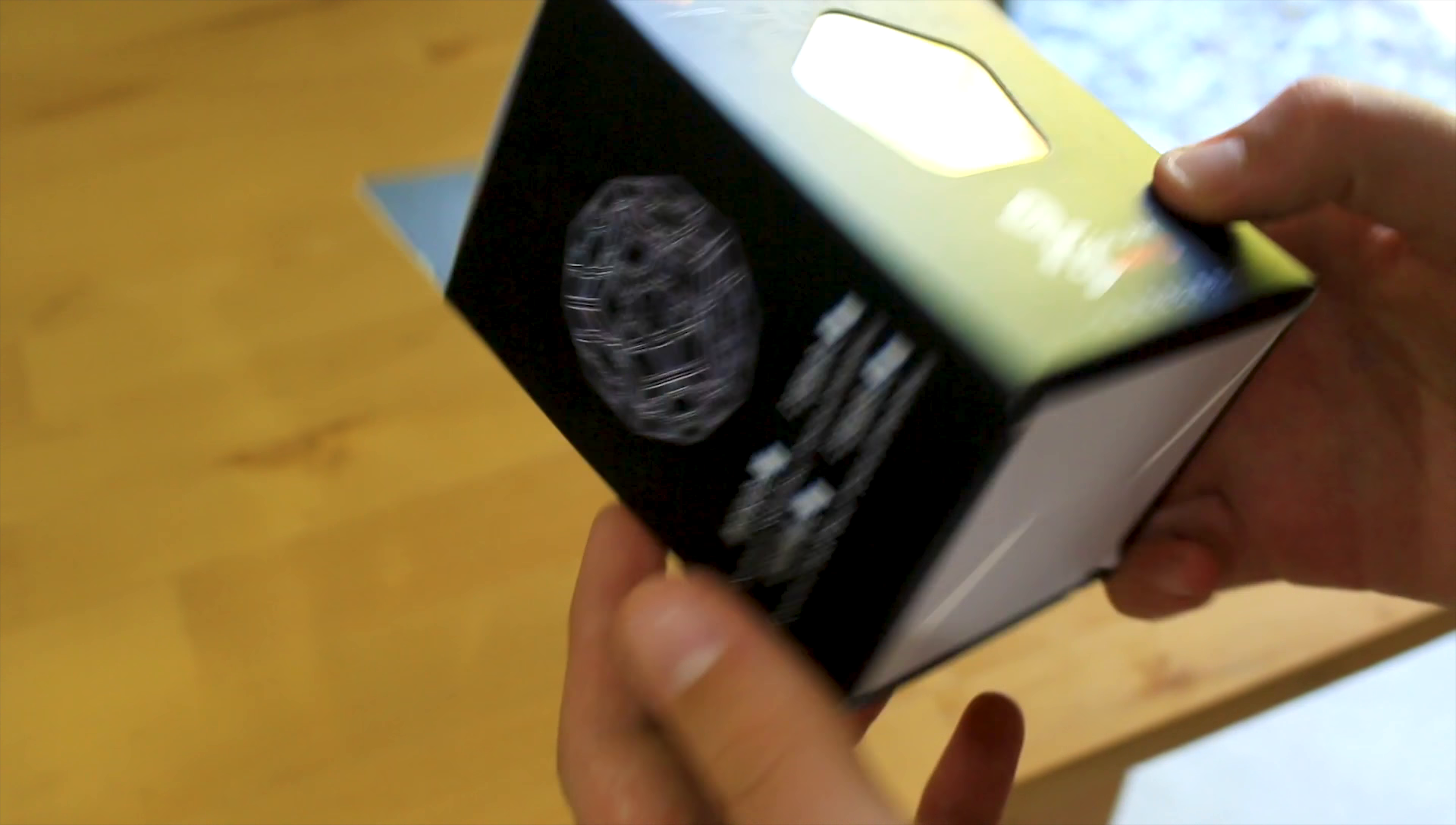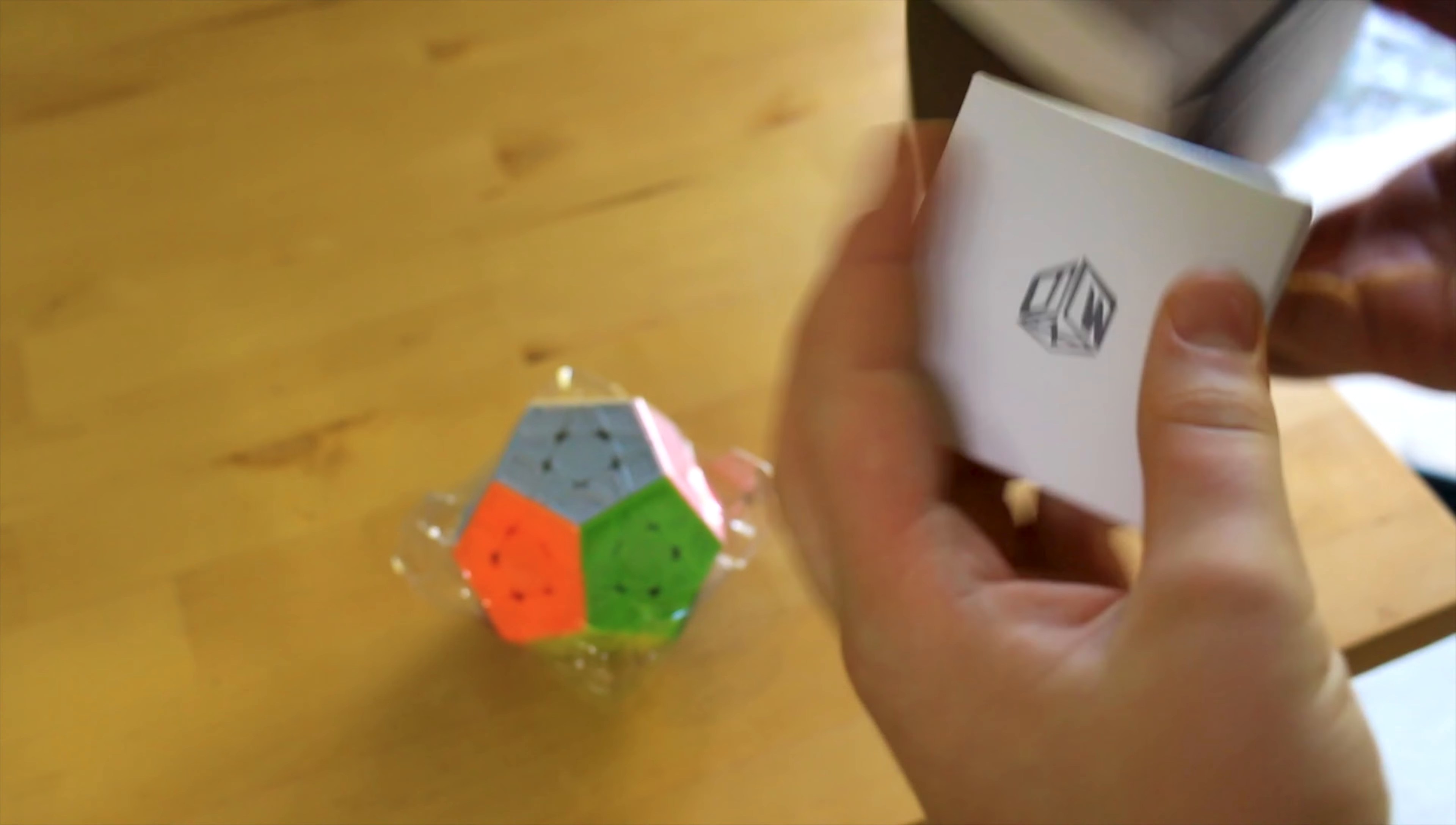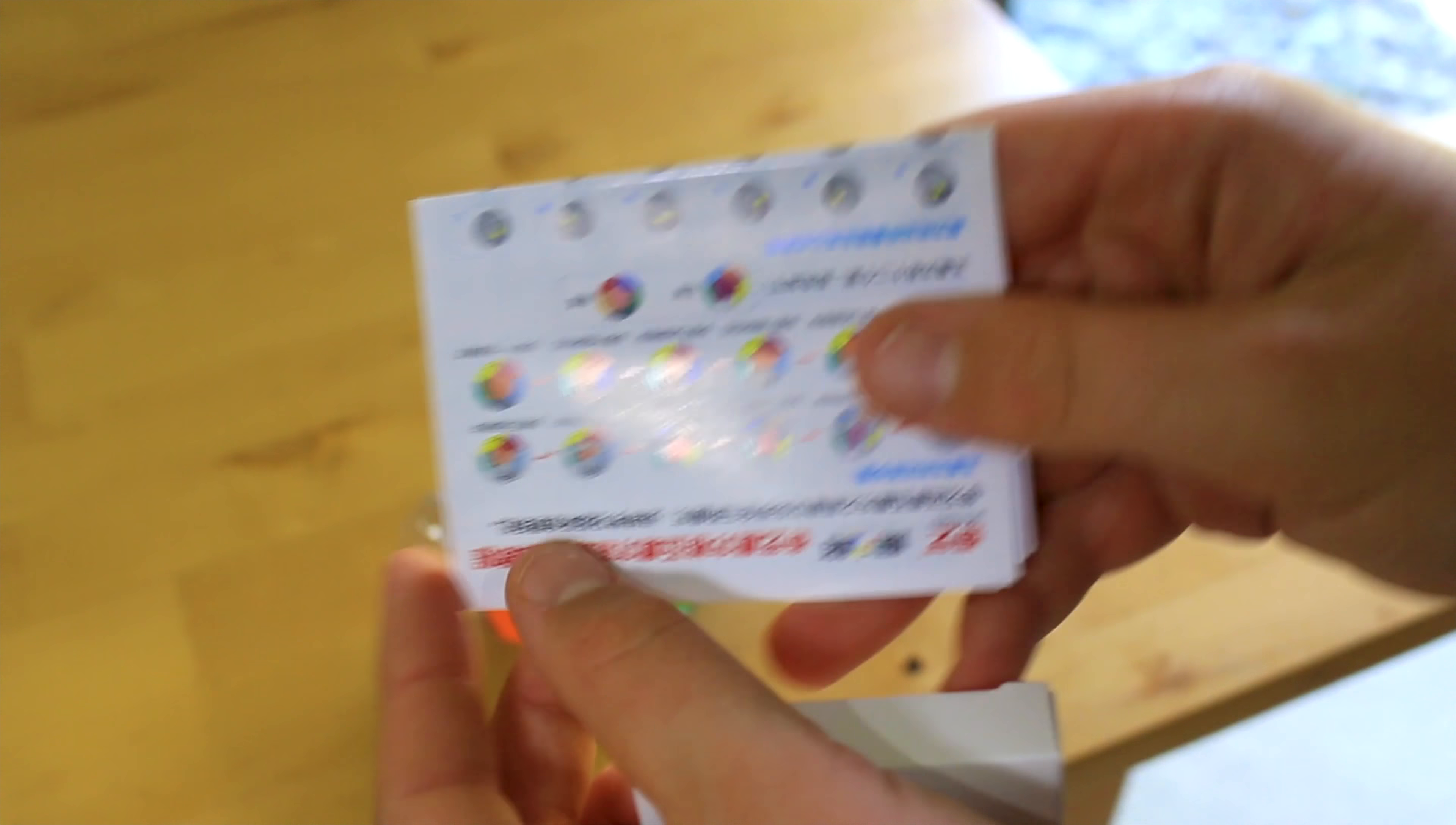Let's get into the Galaxy V2. This cube is super exciting. As well as the cube, it looks like we have another little thing inside. Before I chuck this away, I just want to say this is actually a really cool box, very interesting shape, but I think it looks pretty awesome.